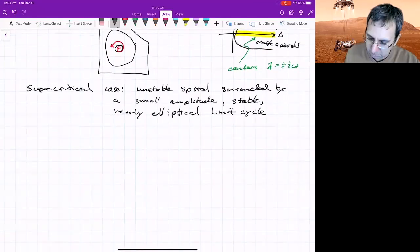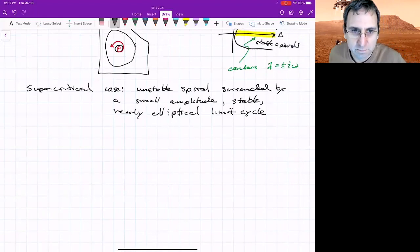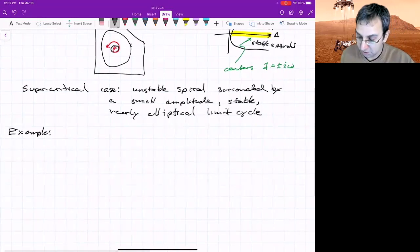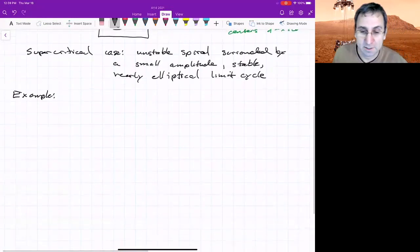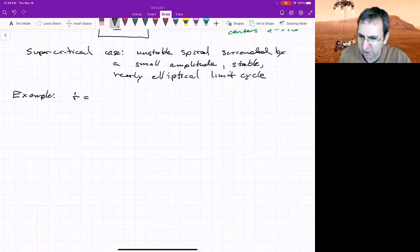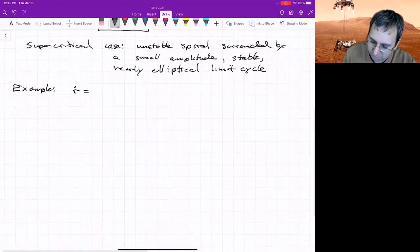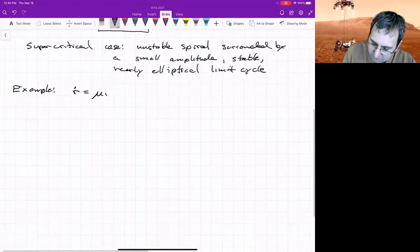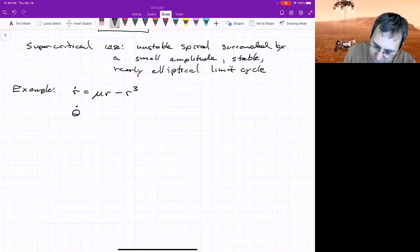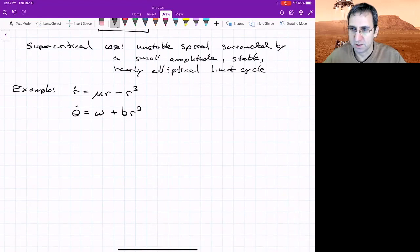Supercritical case means that we'll have an unstable spiral fixed point surrounded by a small amplitude, because we're thinking just near the bifurcation point, a small amplitude stable, nearly elliptical limit cycle. So let me give an example. We'll later get to the subcritical and then compare them. But for now, supercritical. For the example, I'll write this in polar coordinates. Often you'd be given a system in terms of x and y, but you can turn it into polar coordinates.